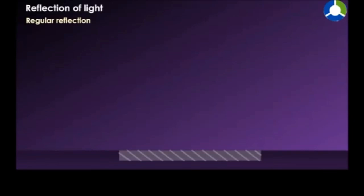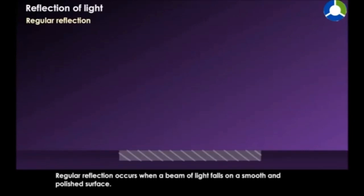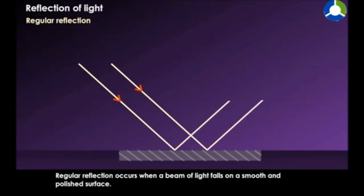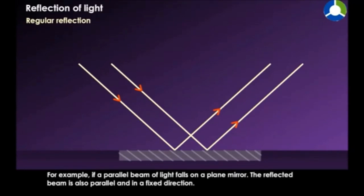Regular reflection occurs when a beam of light falls on a smooth and polished surface. For example, if a parallel beam of light falls on a plane mirror, the reflected beam is also parallel and in a fixed direction.